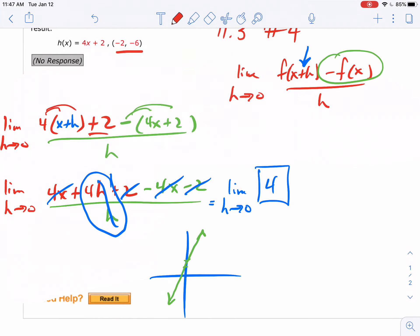It doesn't matter where you put your dot; your tangent line basically would be the actual line. When you have something that's linear, the slope is the same no matter where you're at. That's what it's telling you.